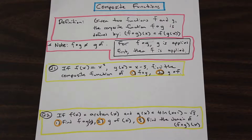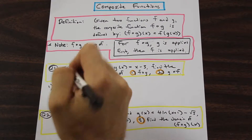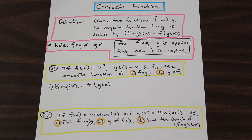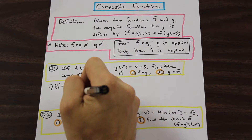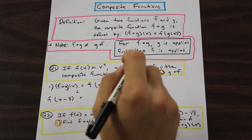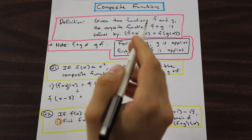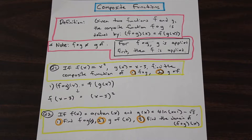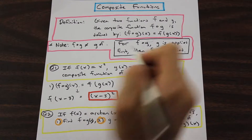Let's do question one. We have f circle g of x — let's rewrite that according to the definition: f of g of x. That means we're going to take g and apply it first. So we have f of (x minus 3). Now we apply f, which is squaring the function. And that is equal to (x minus 3) squared. It's as simple as that.